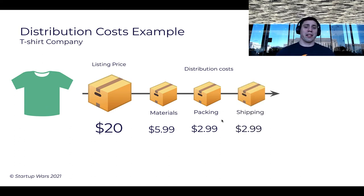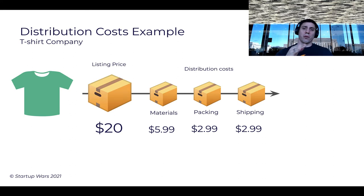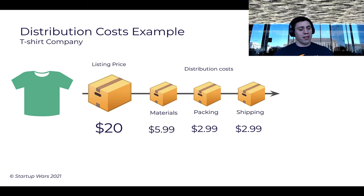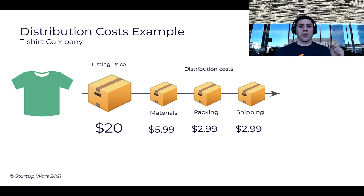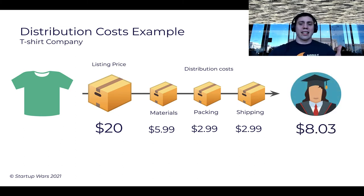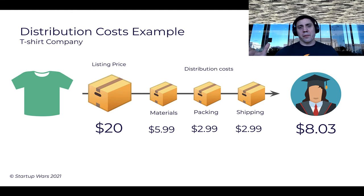And still not all — then you actually have to ship it. Let's say you make a deal with the local post office and for your type of business and the weight of the t-shirt, shipping is only going to cost about $3. So going through the same example: the t-shirt sold online for $20. We subtract $6 for the materials, $3 for the packing, and another $3 for the shipping. That yields us $8 and three cents.